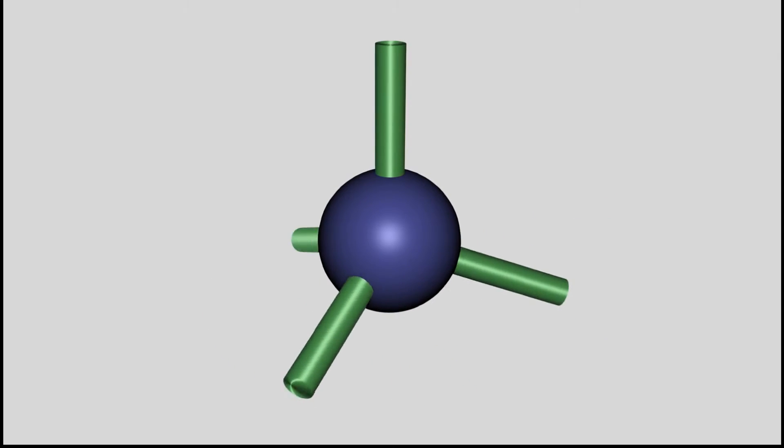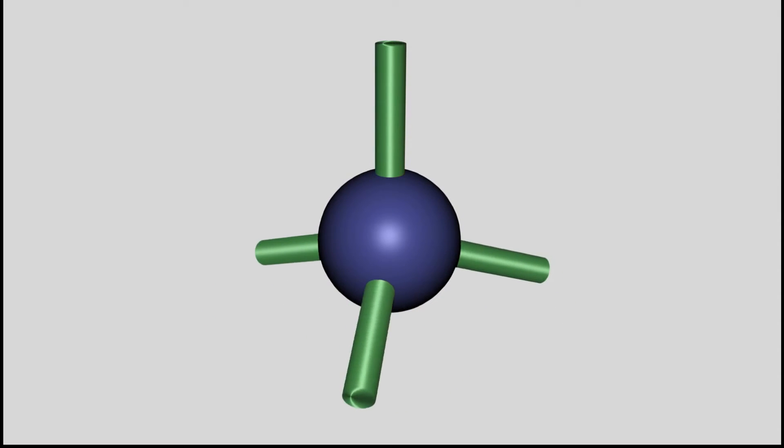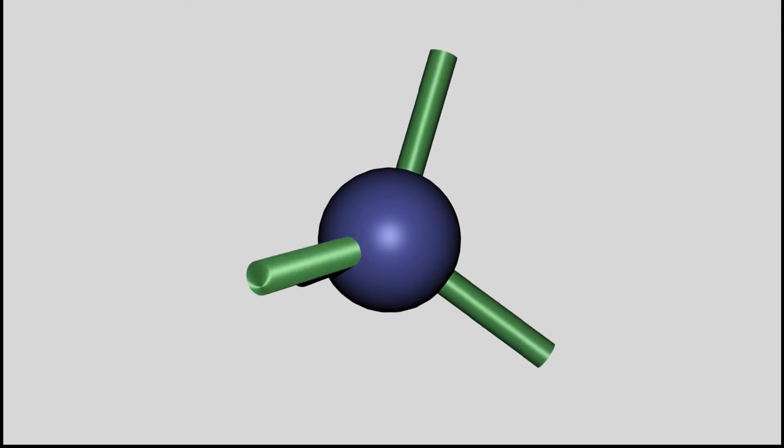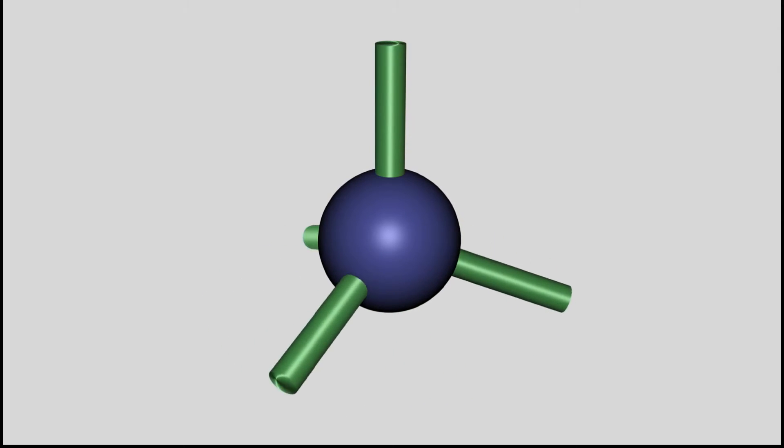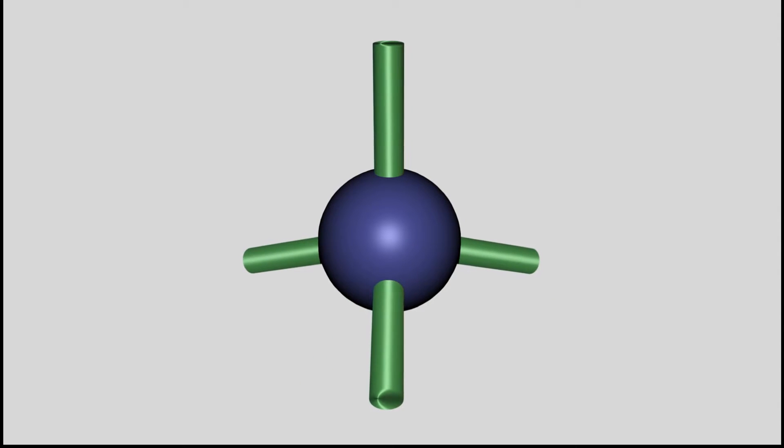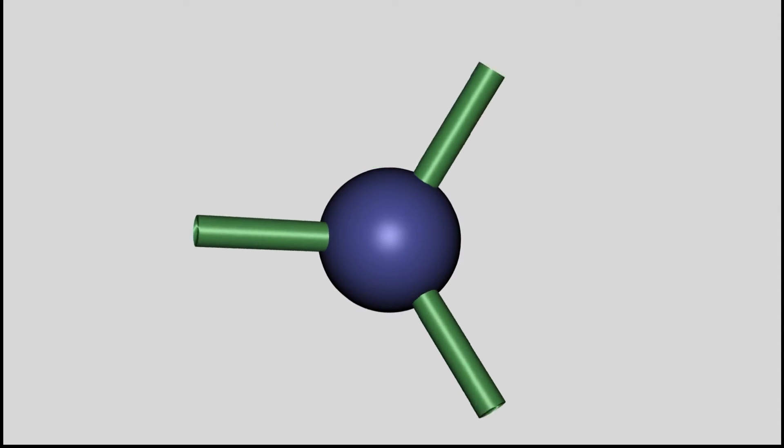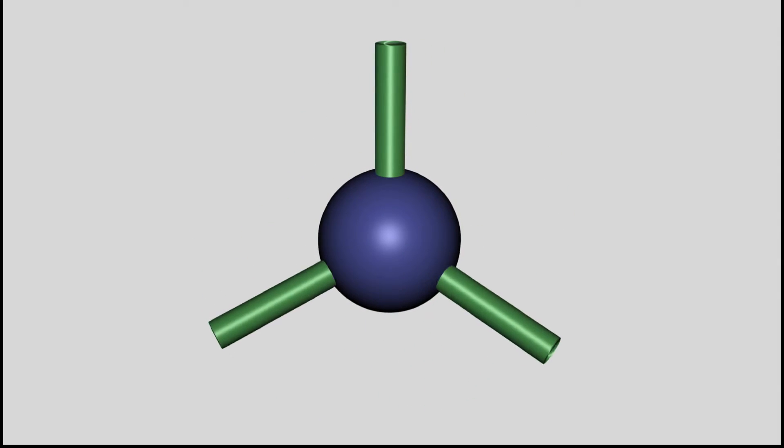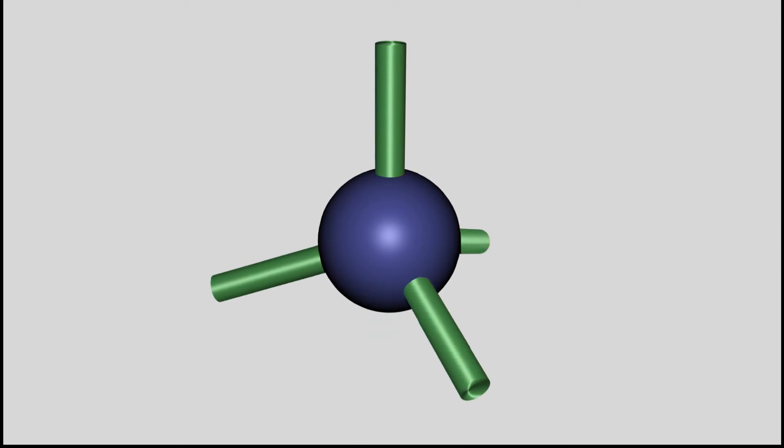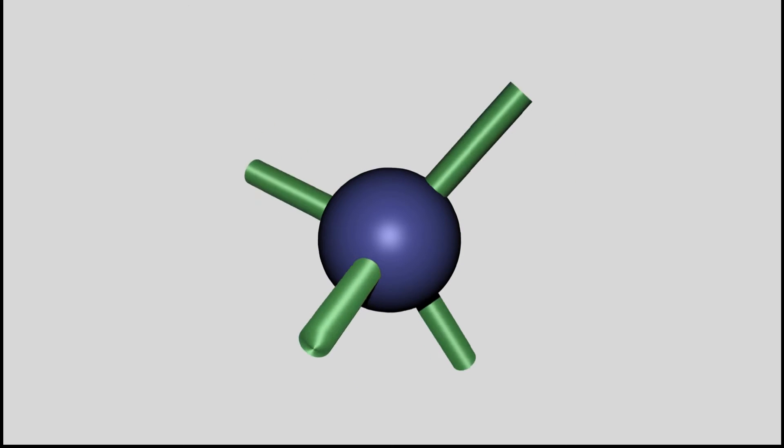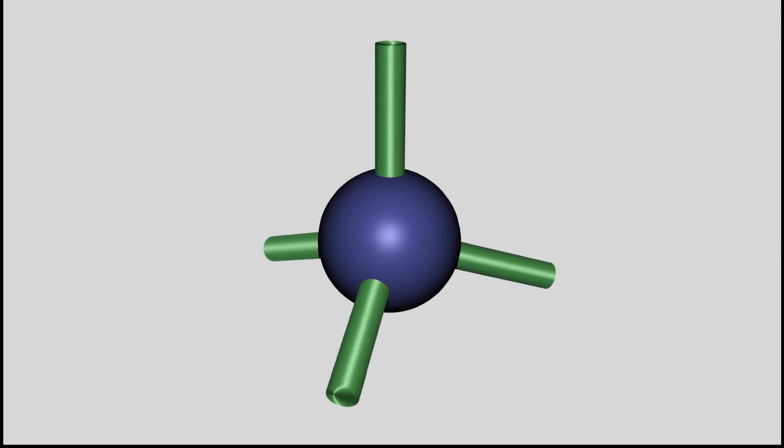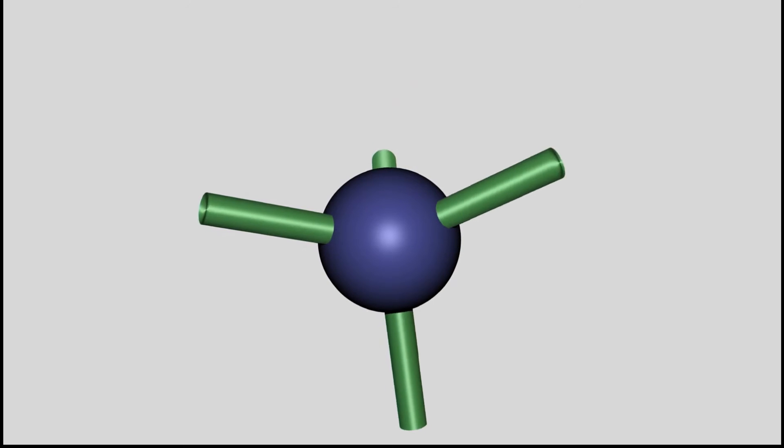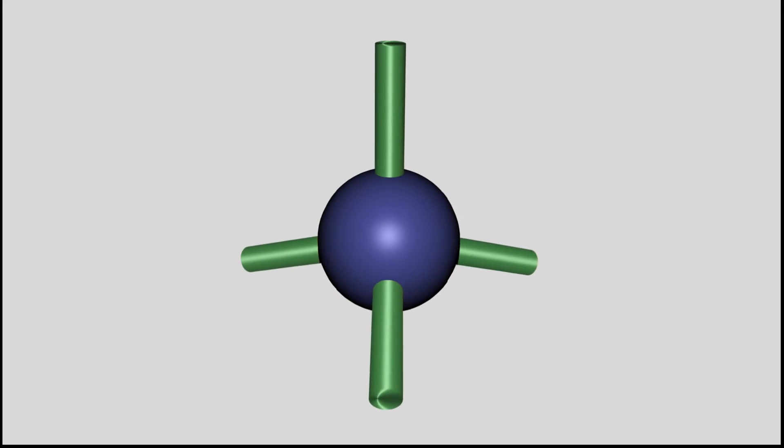The ball and stick model is often used to illustrate covalent bonds. In doing so, the atoms are represented by spheres and they are connected by rods which represent the bonds. The angles between the rods are the same as the observed angles between the bonds. Like demonstrated, the angle between the hybridized orbitals of silicon is about 109.5 degrees. This angle is also called tetrahedral angle, because it is the angle between the segments joining the center and the vertices of a tetrahedron, which is a body having four corners.